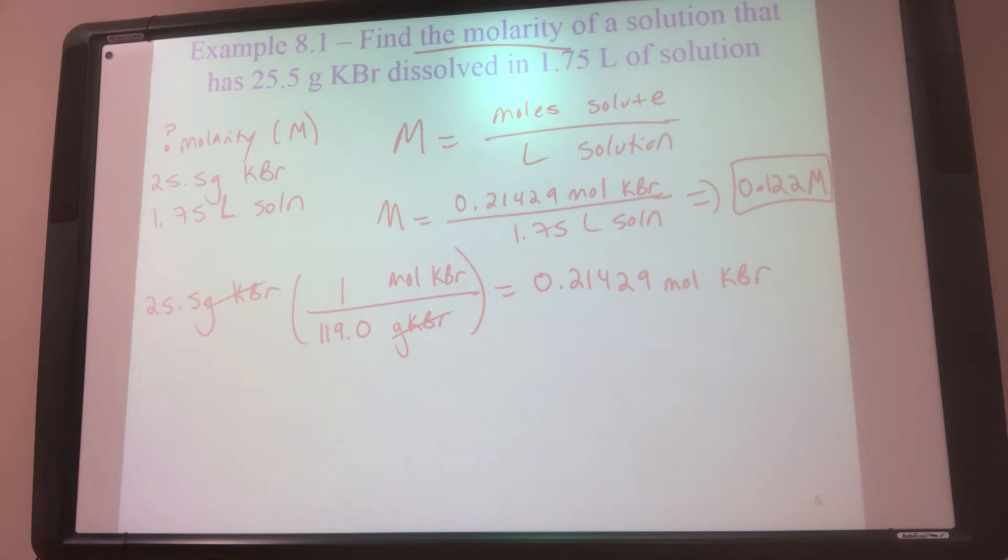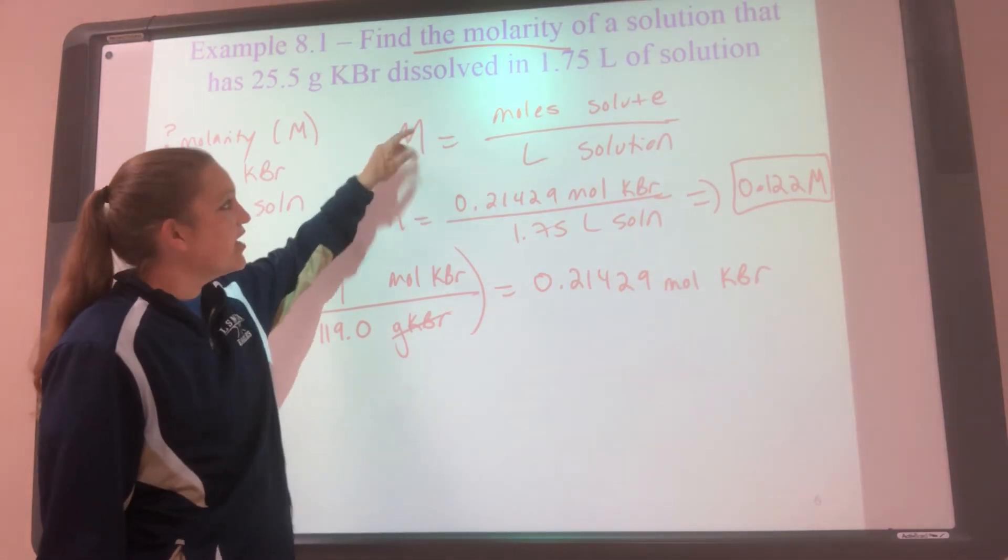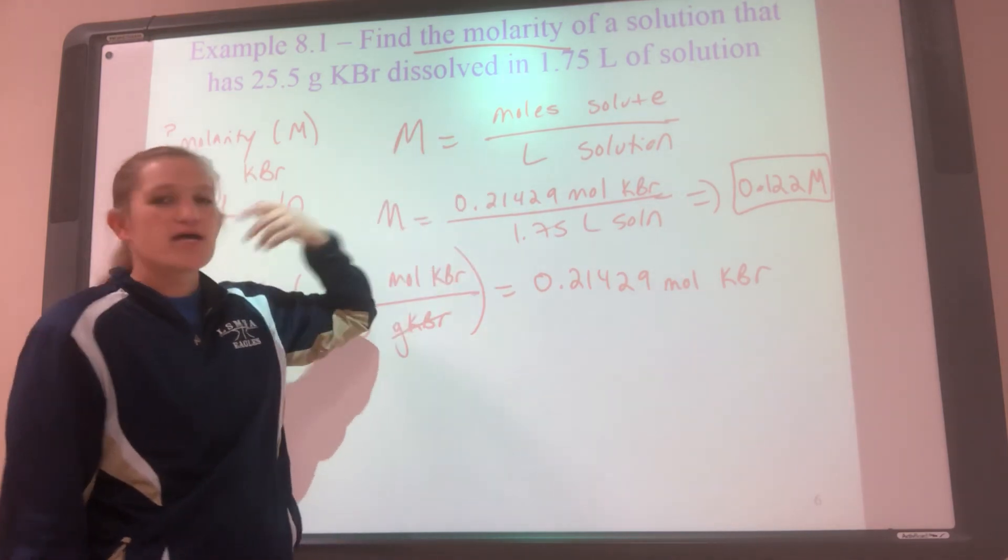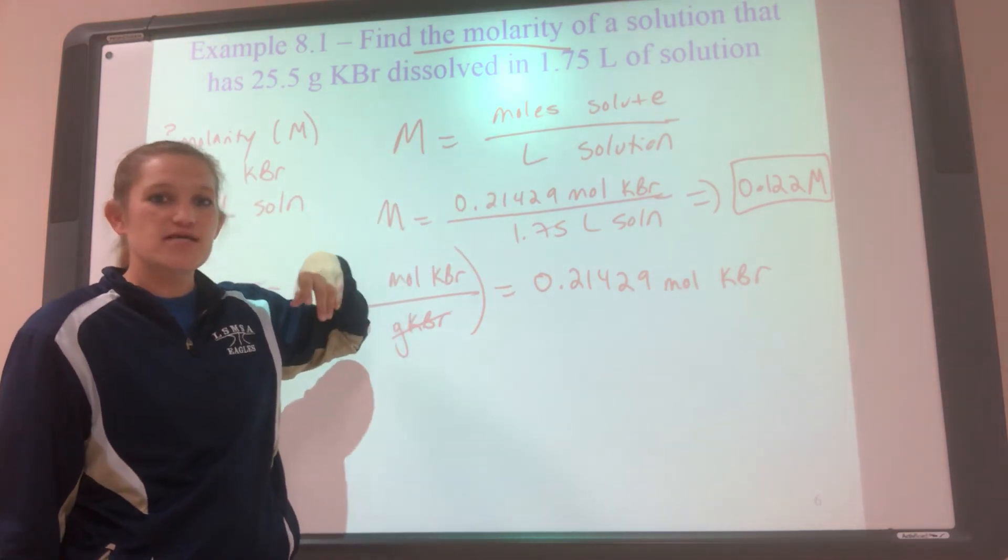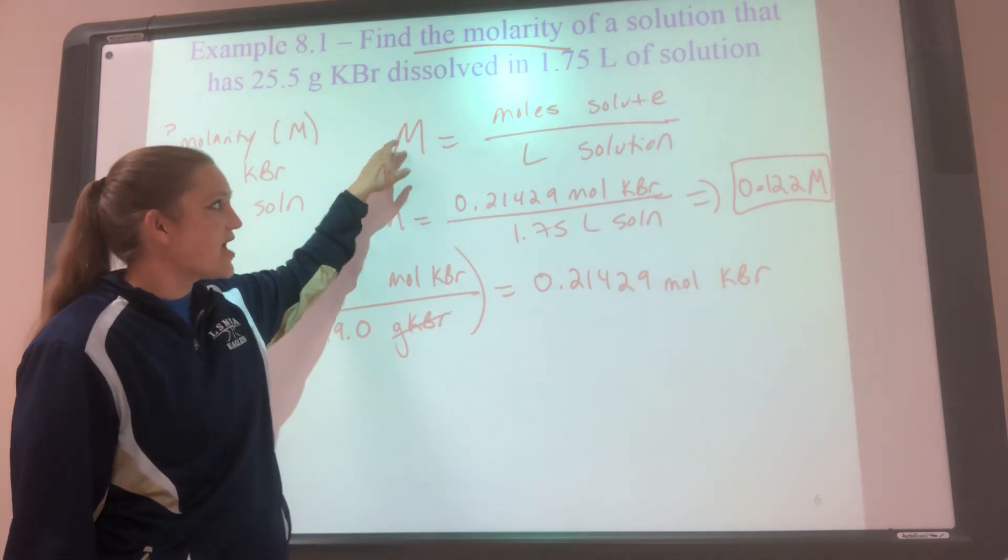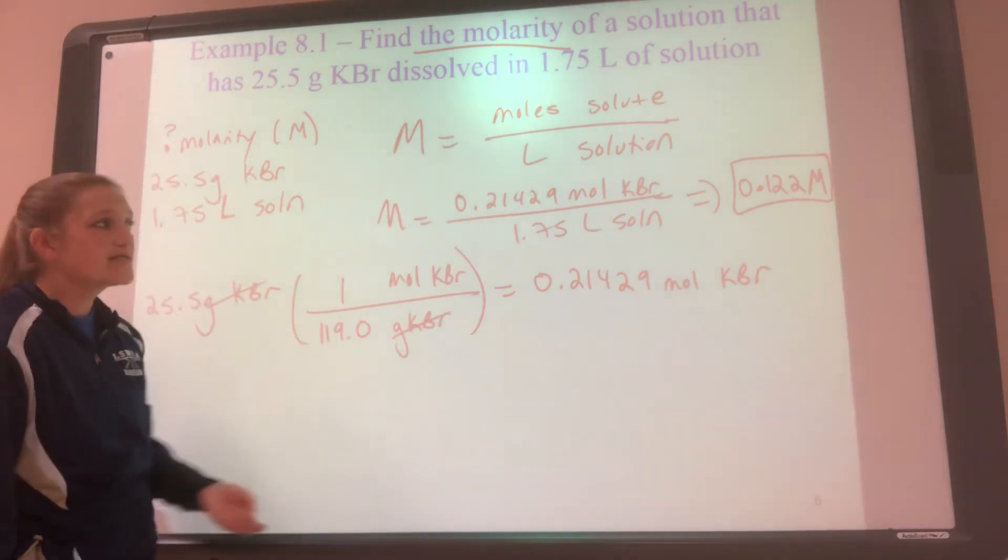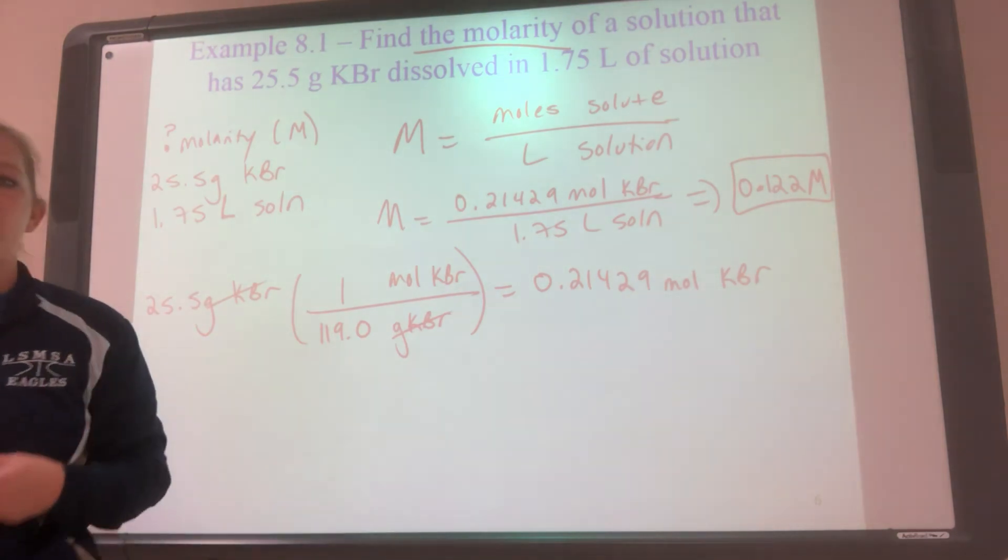All right. So that's finding the molarity. But what if I have the molarity? What if I have the molarity and I want one of the parts? How can I use molarity as a conversion? Kind of similar to what we did with density. So if I had the density, I could use the density to find one of the pieces. So on the next lecture, we're going to talk about using molarity as a conversion factor.